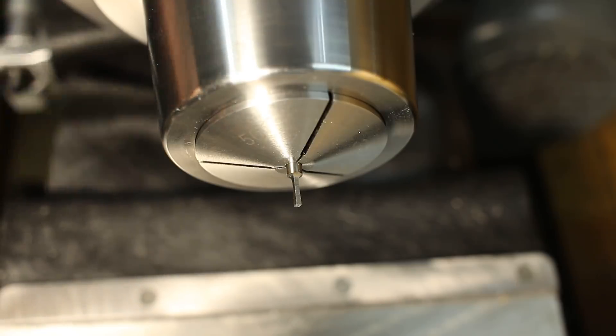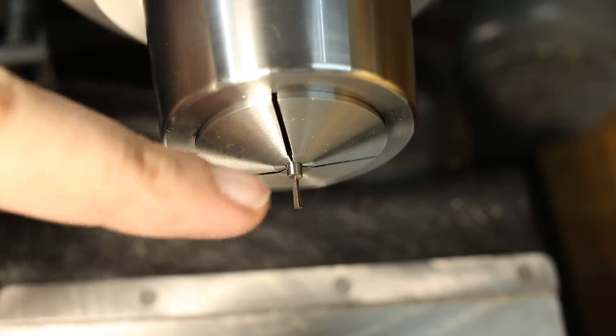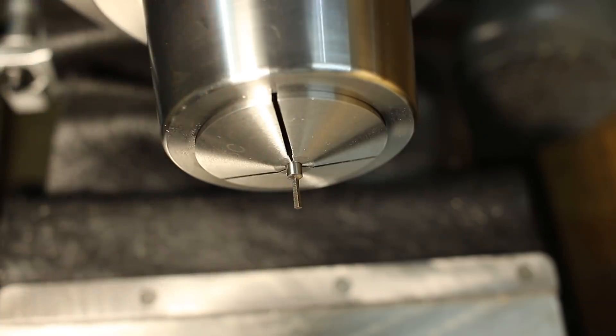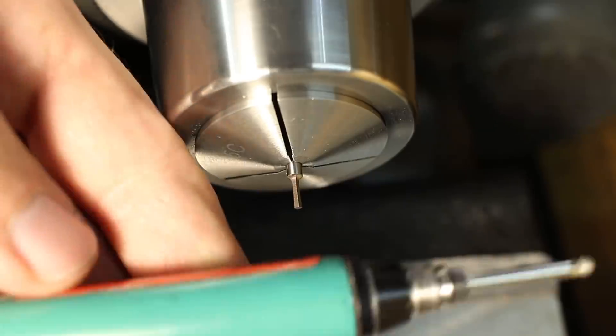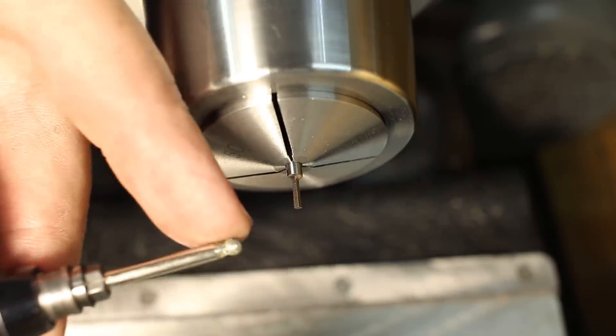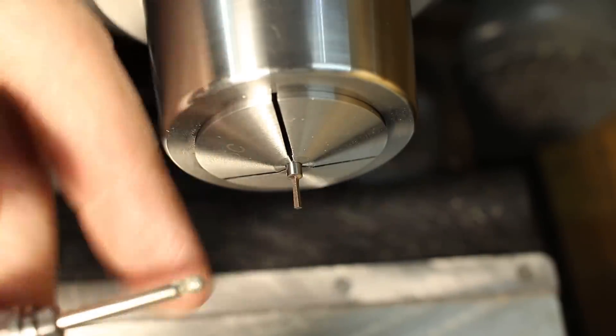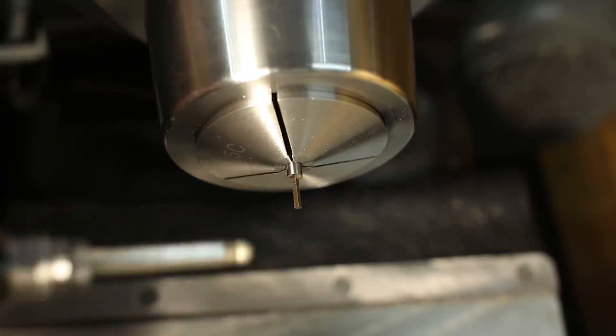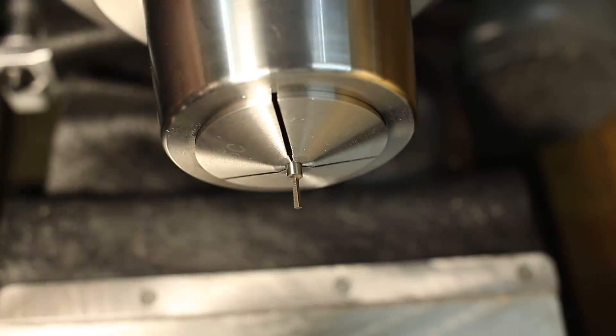And it's really easy to do that. Clamp the part in the lathe and the collet, let it spin relatively slow. Then I have my die grinder here with a small diamond grinding tip and I'm just going to hollow out the front a little bit.